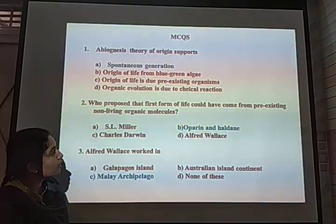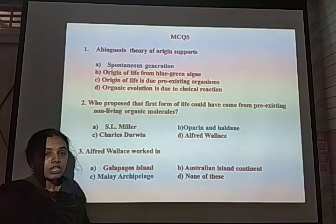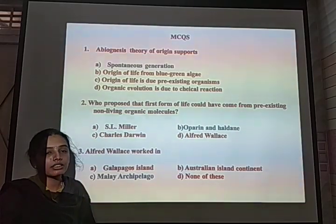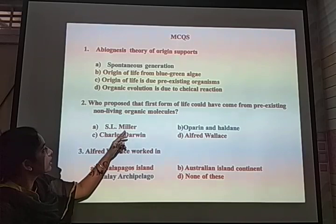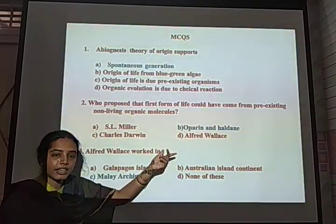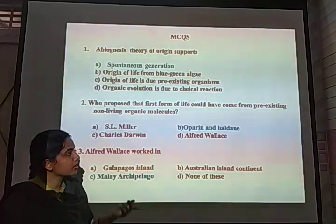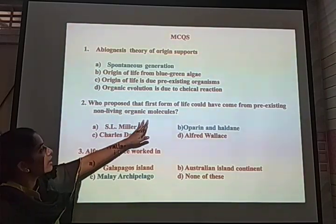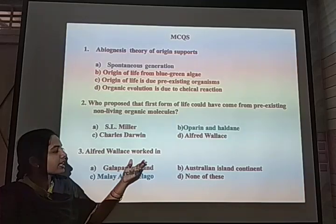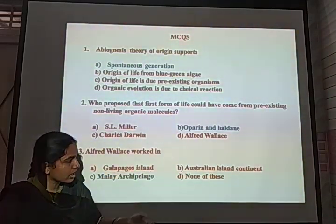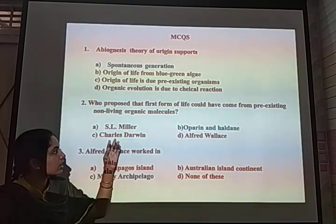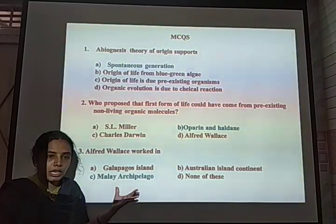Next MCQ: Who proposed that the first form of life could have come from pre-existing non-living organic molecules? The scientists who described chemical evolution were Oparin and Haldane, and it was experimentally conducted by Stanley Miller and Harold Urey. The answer is Oparin and Haldane. Alfred Wallace was a naturalist who independently arrived at the same conclusion as Charles Darwin while working in the Malay Archipelago.